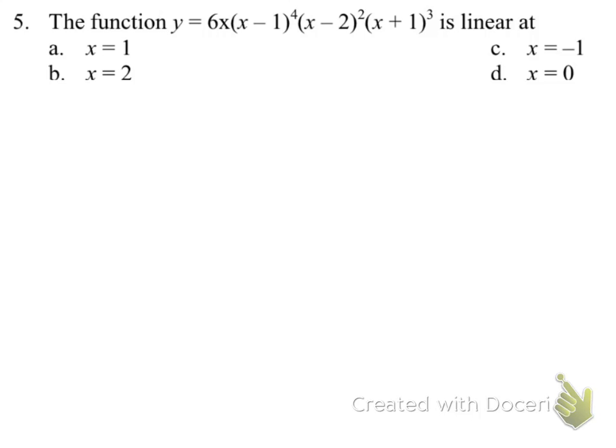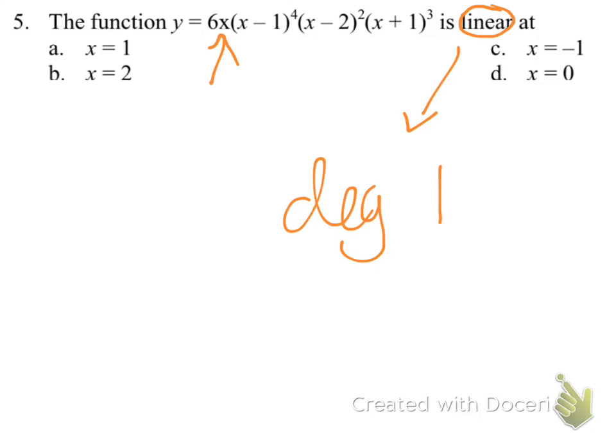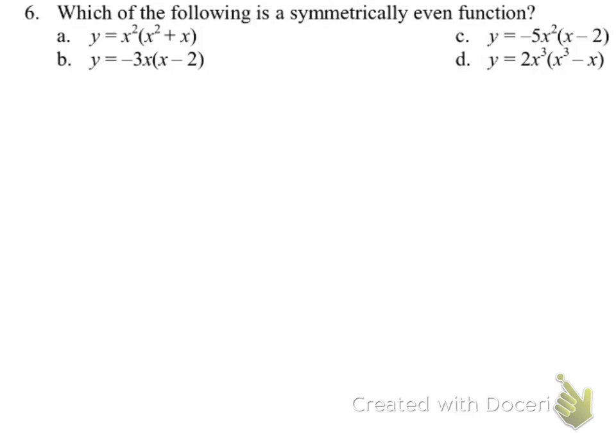The next question: the function 6x [and so on] is linear at which part? Linear means degree one, and that x-intercept right there is degree one, which means it's linear at x equals zero, because 6x causes the x-intercept at x equals zero.